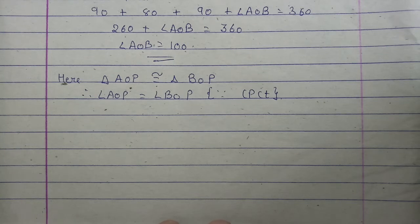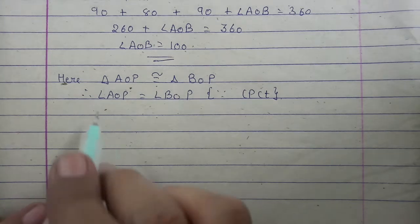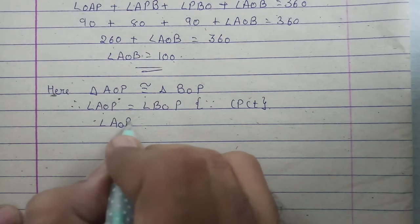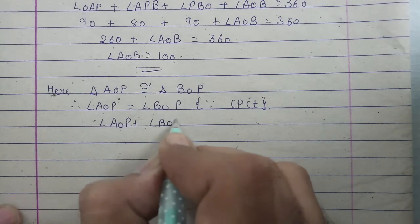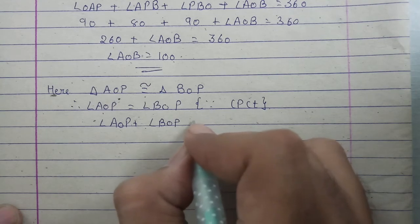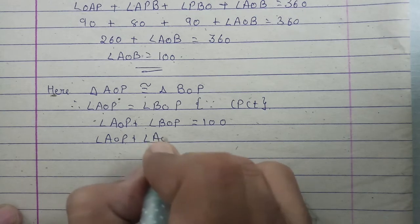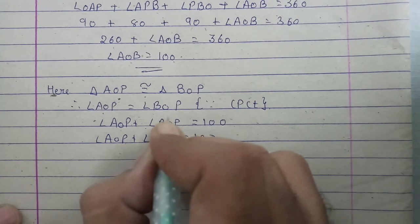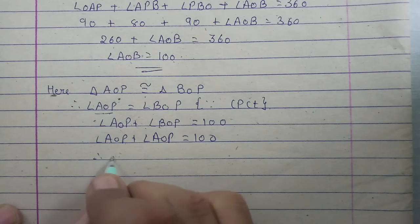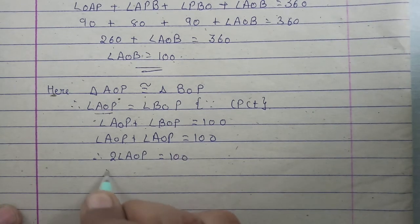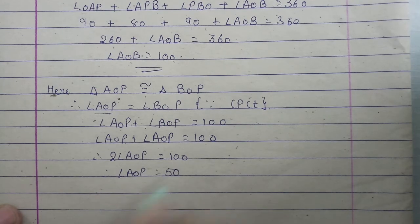Now the thing is that we got these two angles equal. Now this whole angle we have is 100, which means the sum of these two will be 100. So angle AOP plus angle BOP is equal to 100. Angle AOP plus angle AOP is equal to 100, substituting BOP. So 2 times angle AOP is equal to 100. Therefore angle AOP is equal to 50.